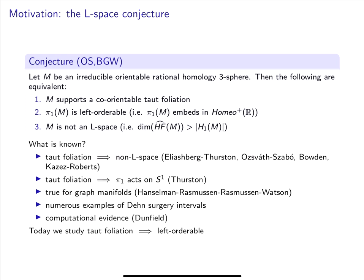What is known about the conjecture? Well, first, we know that taut foliation implies non-L-space. This piece passes through a connection between taut foliations and contact structures, and subsequently four-dimensional symplectic topology.